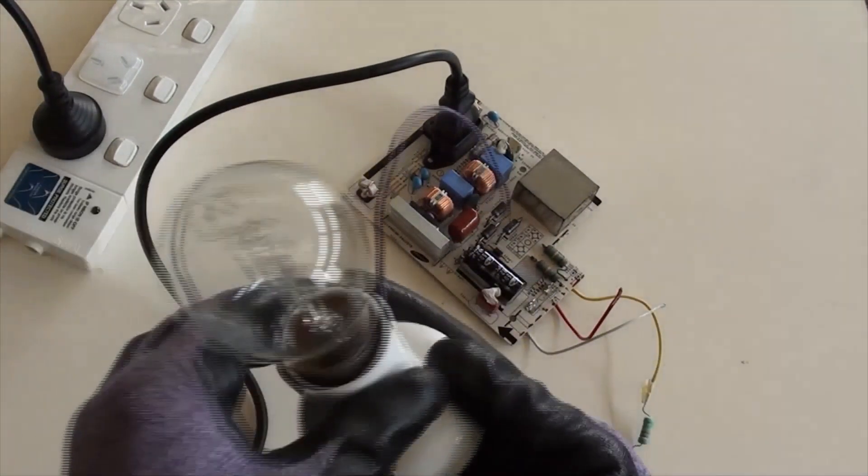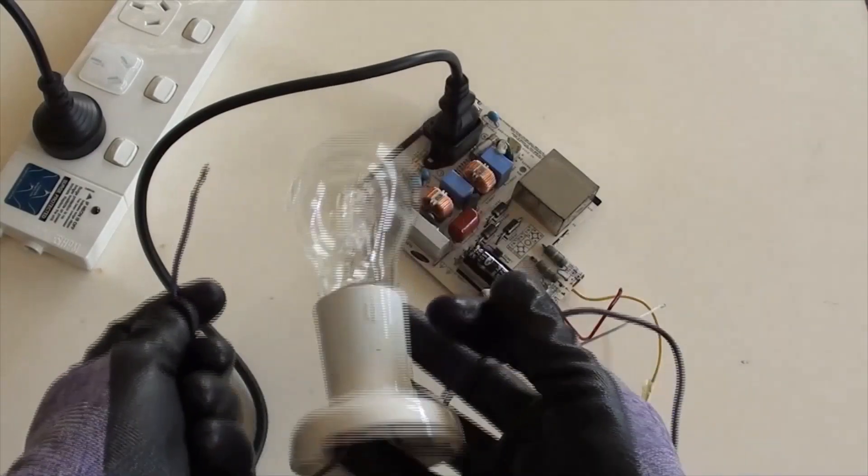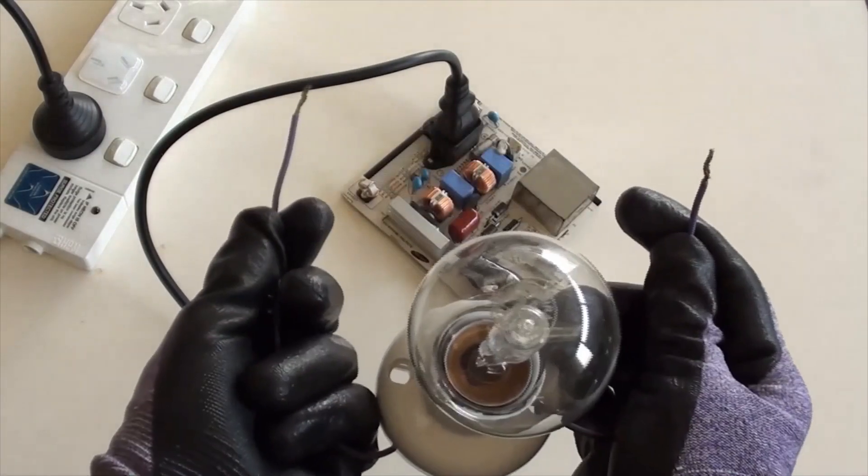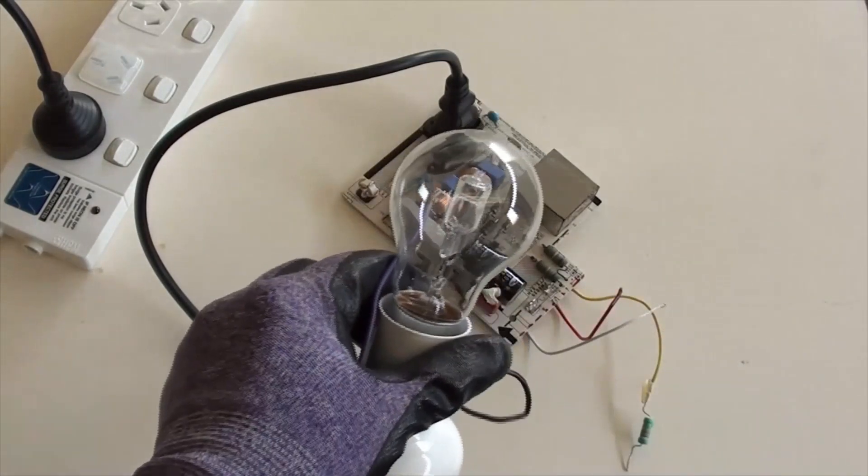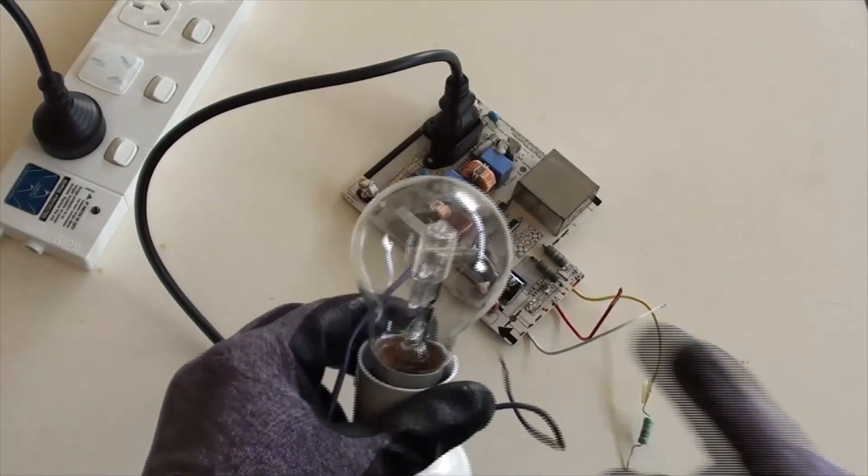This is the best way to discharge a capacitor: by using a bulb with the rating of 220-240V and 60-120W in this case.